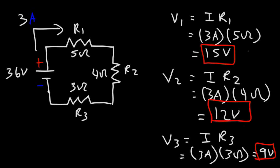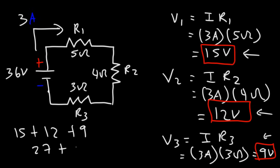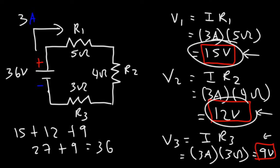Let's add the three voltage drops: 15 plus 12 plus 9. 15 plus 12 is 27, and 27 plus 9 is 36 — that matches the battery voltage, which is a quick way to verify the problem was done correctly. Those are the voltage drops across each resistor.